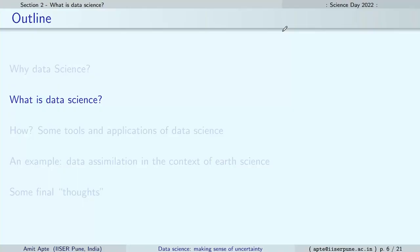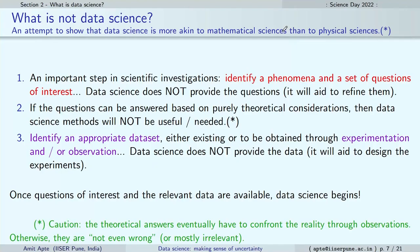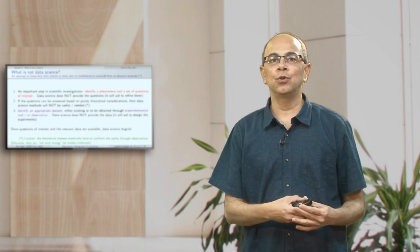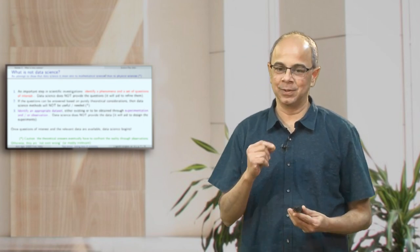Now that we have discussed a bit about why we want to study data science, let us see what exactly it is. Whenever I try to think of what something is, maybe it is useful to also think of what it is not. So, what is not data science? This is just an attempt — different people will have very different answers. But an attempt is to relate it to what science is in the first place.